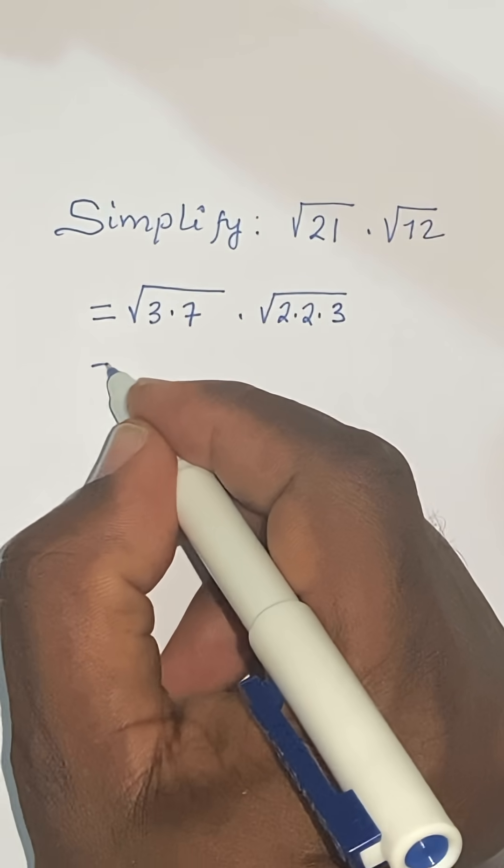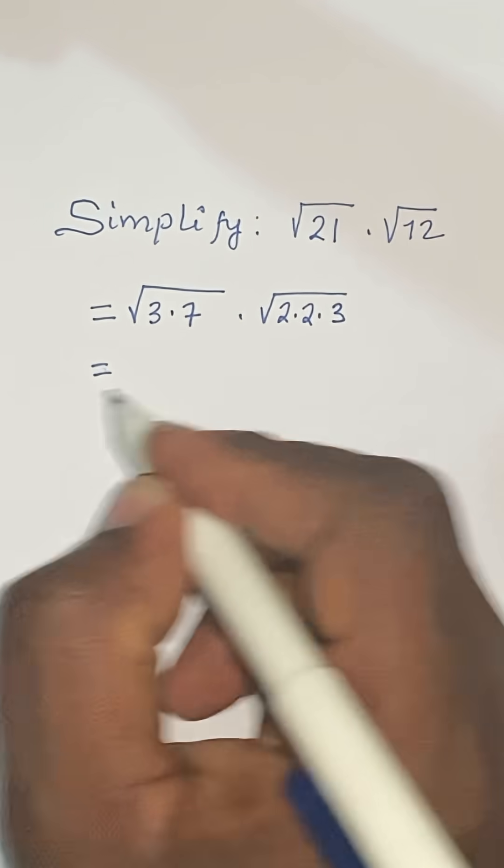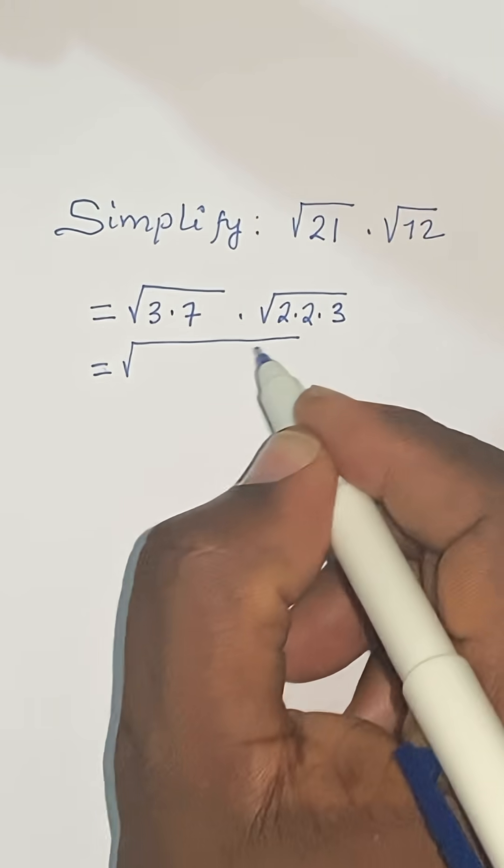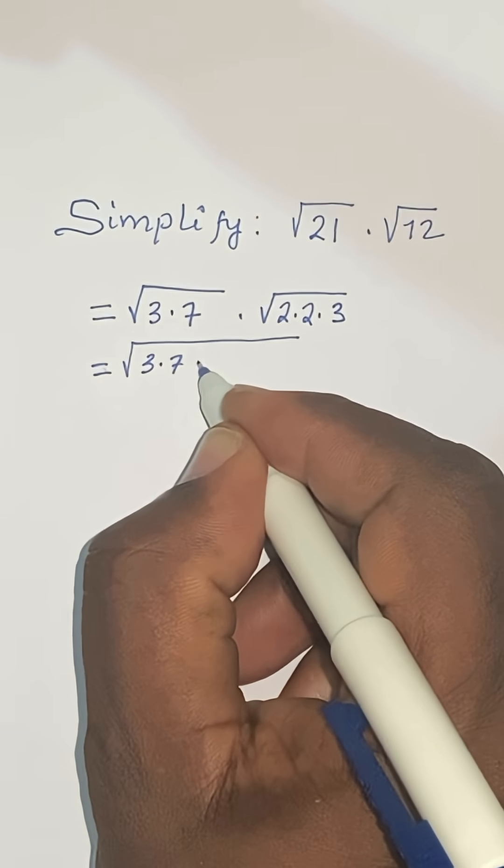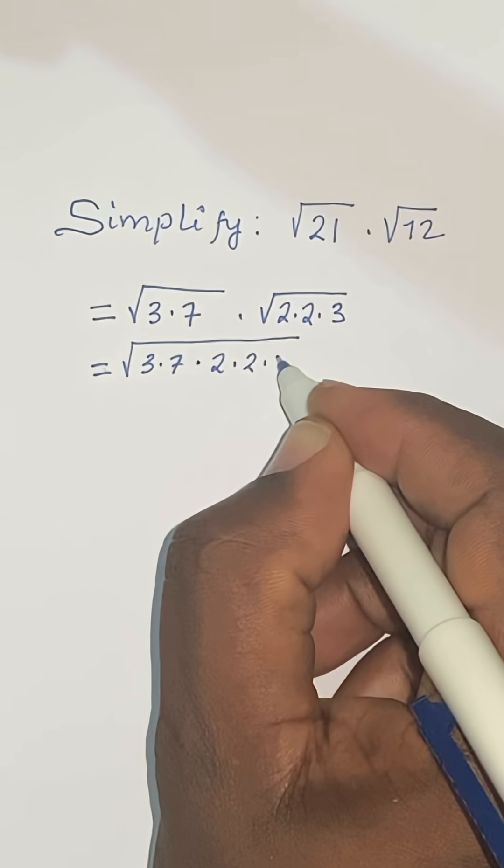So we use the property of radicals and multiply the numbers. So we are going to write this as the square root of 3 times 7 times 2 times 2 times 3.